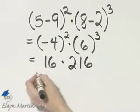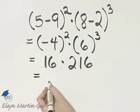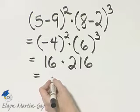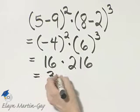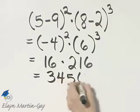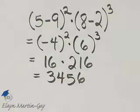Then you'll need to go off to the side and multiply these two numbers, but 16 times 216 is 3,456. That's our result.